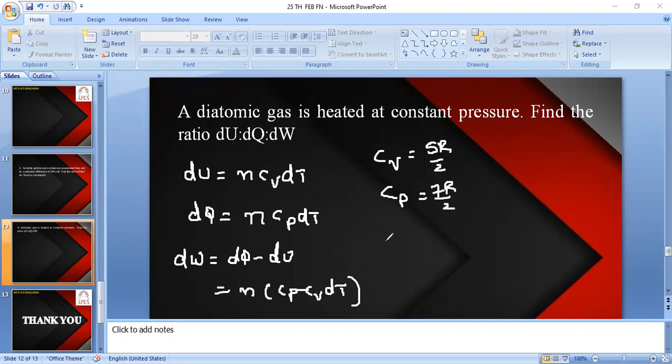So based on that, if you just consider the ratio between dU, dQ, and dW, in all these cases n dT is common and it will be cancelled here.